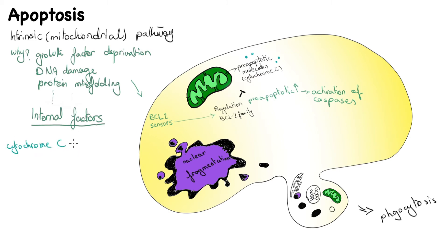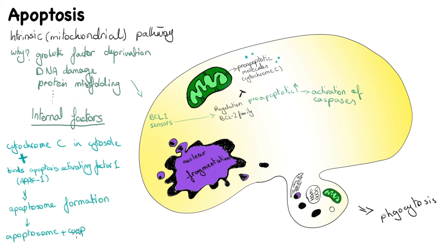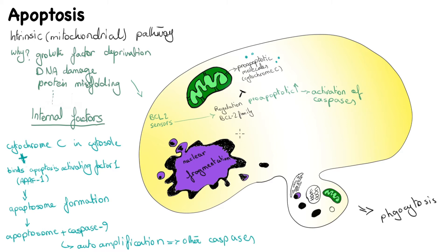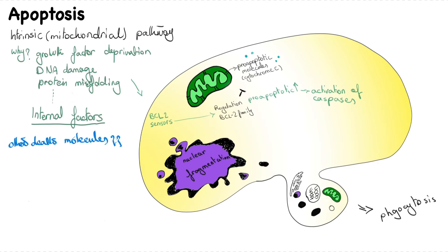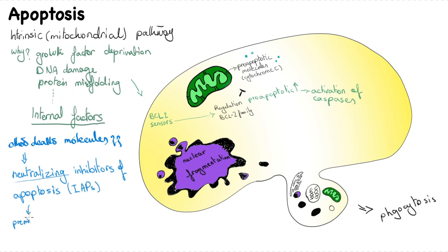Once cytochrome c is in the cytosol, it binds to a protein called apoptosis-activating factor 1 (APAF1), forming a structure called the apoptosome. The apoptosome binds caspase 9, which is the critical caspase in the mitochondrial pathway, initiating an auto-amplification process by which other caspases are also activated. Other pro-apoptotic death molecules work by neutralizing inhibitors of apoptosis (IAPs), thereby permitting the initiation of caspase cascades.